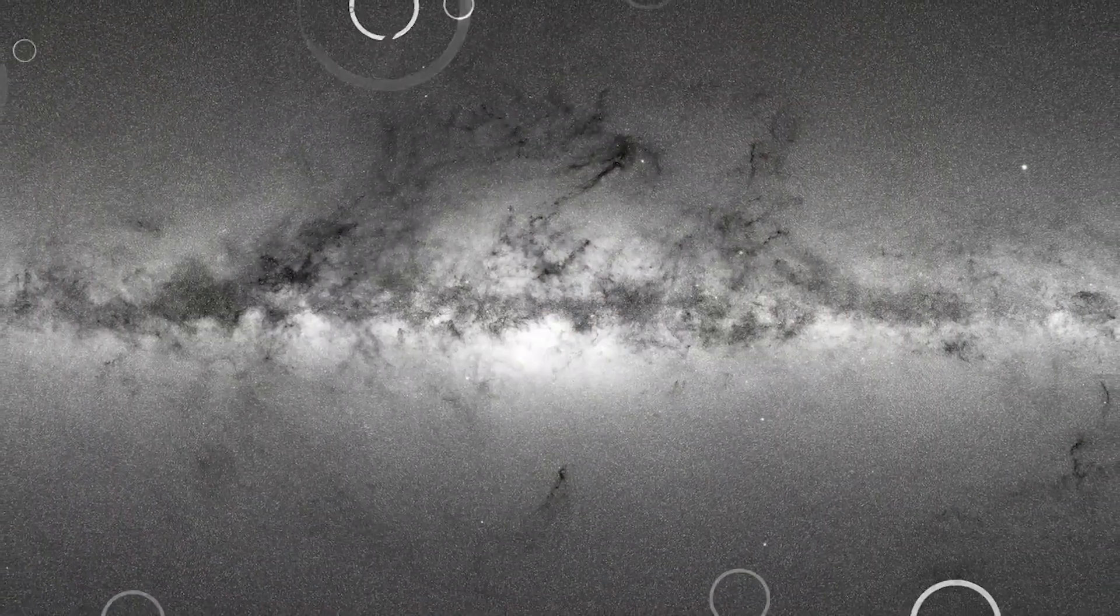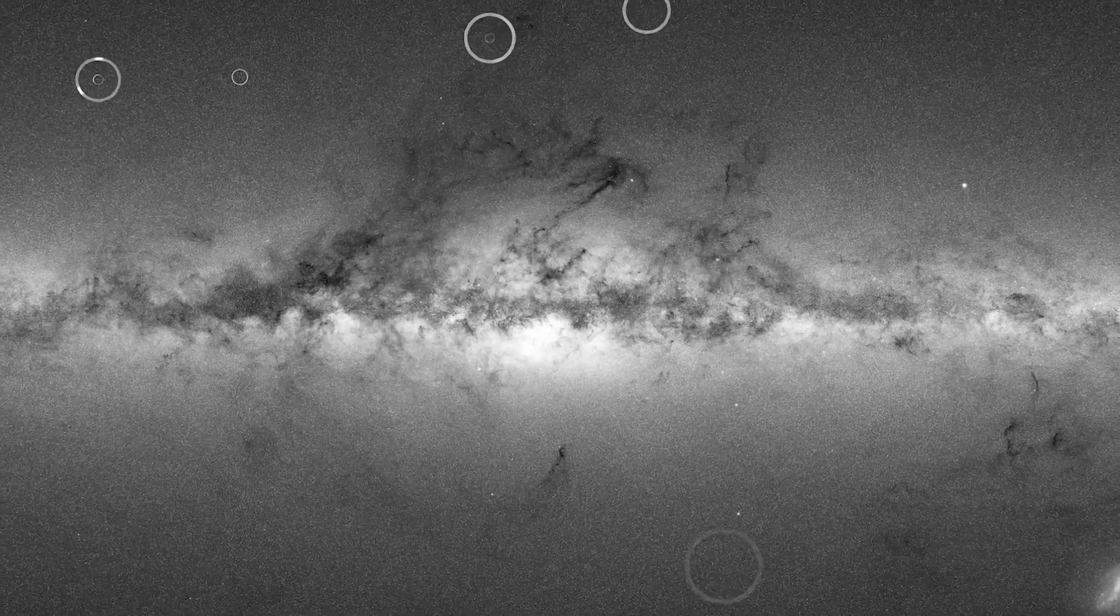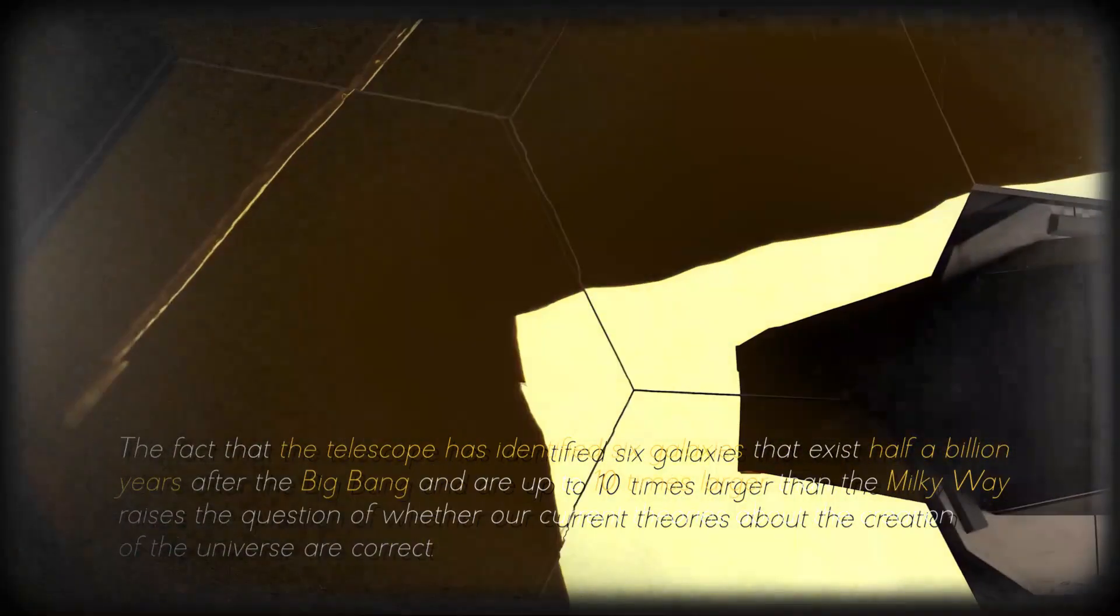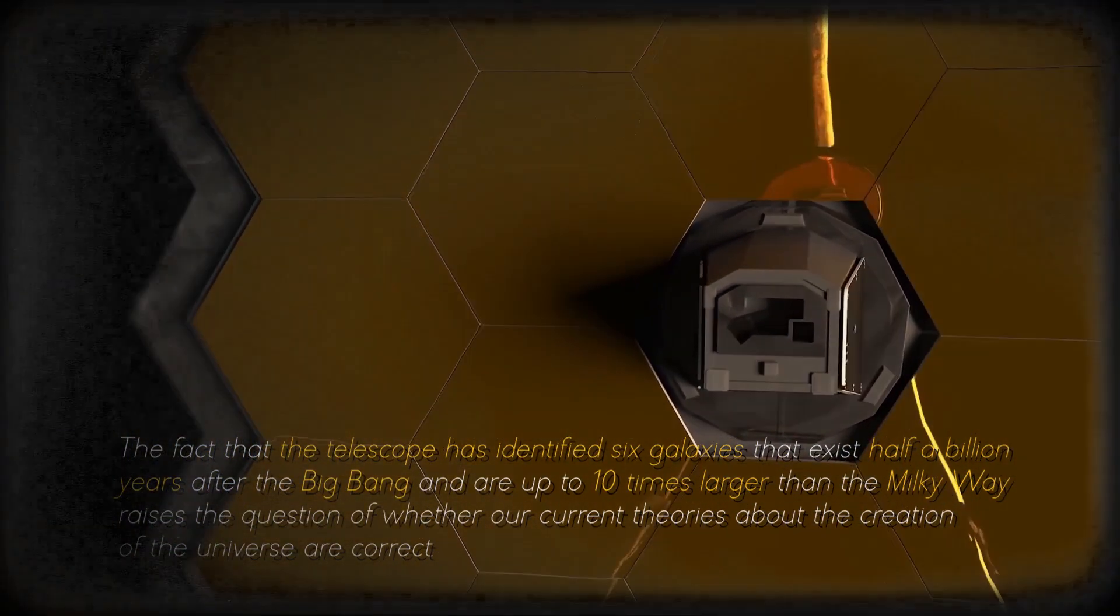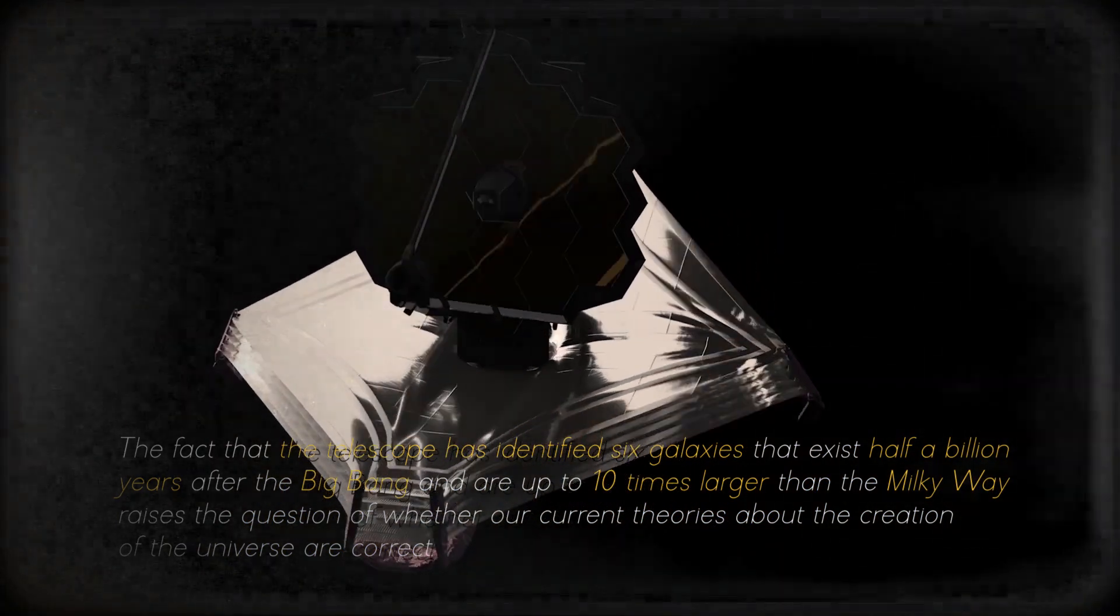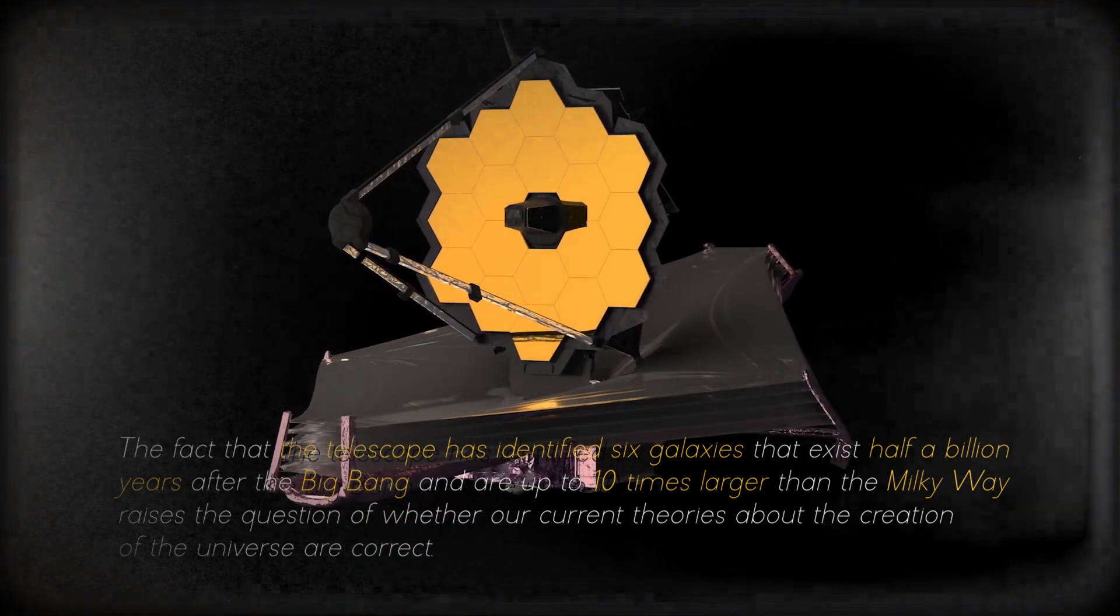Previously, these galaxies were thought to be less developed than the Milky Way, but the new findings suggest that we may be missing crucial information. The fact that the telescope has identified six galaxies that exist half a billion years after the Big Bang and are up to ten times larger than the Milky Way raises the question of whether our current theories about the creation of the universe are correct. Kaku explained that it takes billions of years to create a galaxy like the Milky Way.